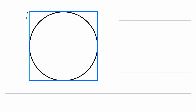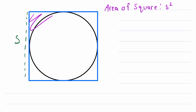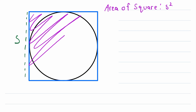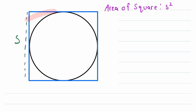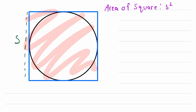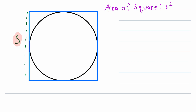Let's say that the side length of this square is S. Right there we've already got one area. The area of the blue square is S squared — that's this area here, the area of the whole blue square. Because the area of a square is just the square of its side length. Its side length is S, so that's S squared.